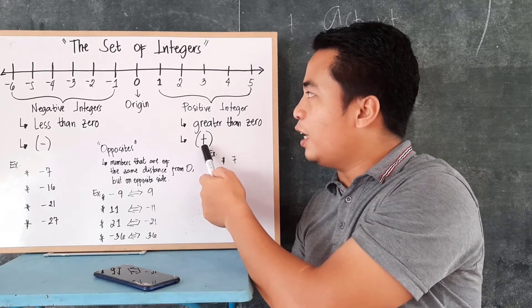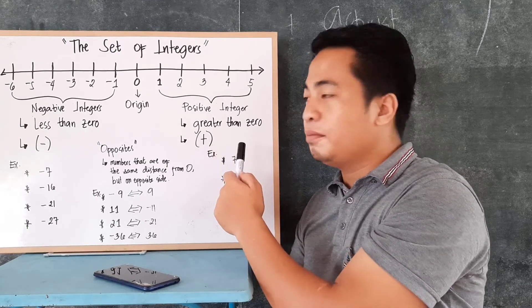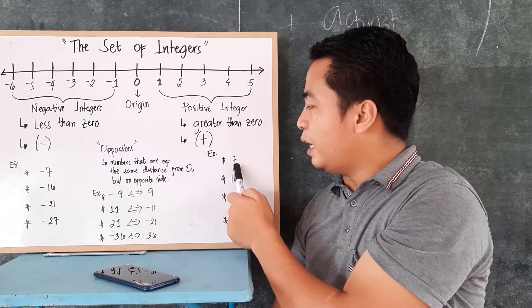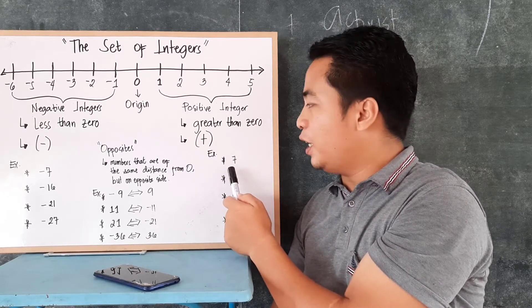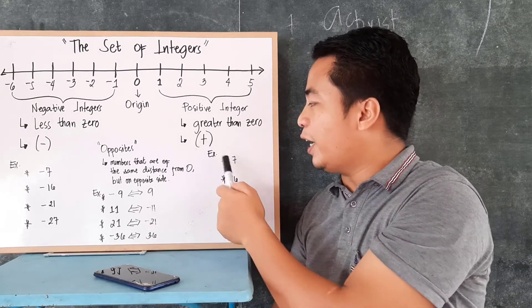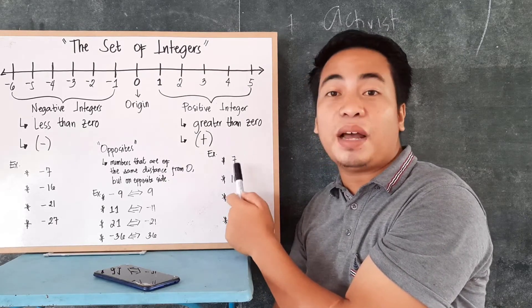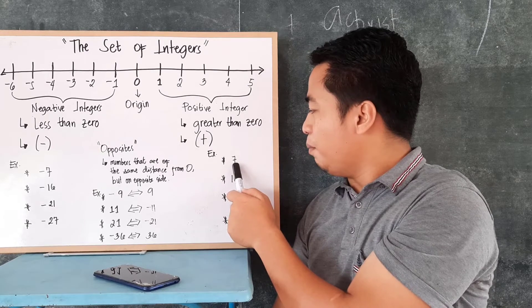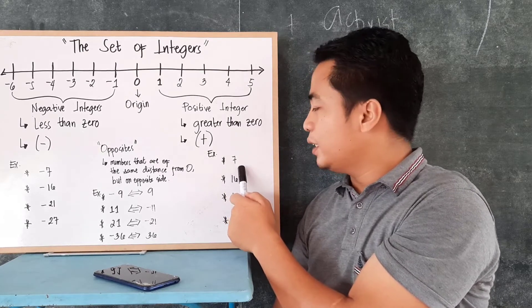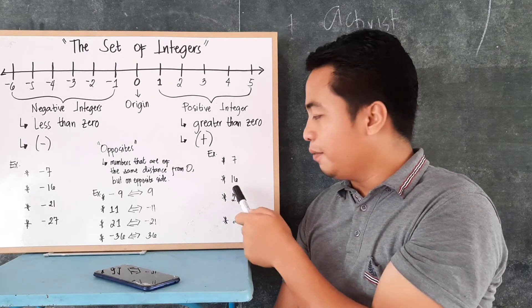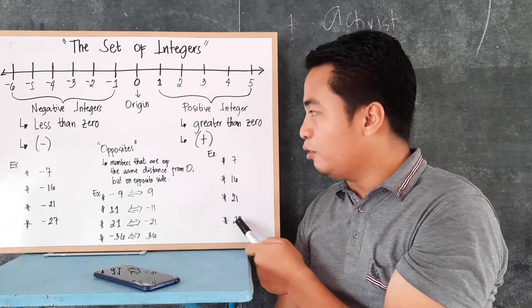Now, we don't need to use this one all the time, because, for example, we have 7 in here. Every number that doesn't have a sign like this, or a negative sign, it is already understood that it is a positive number. So, for example, this one, it is positive 7, positive 16, positive 21, positive 27.